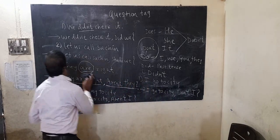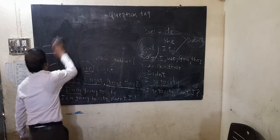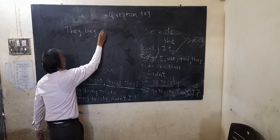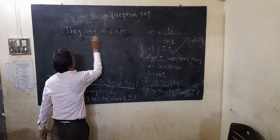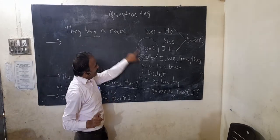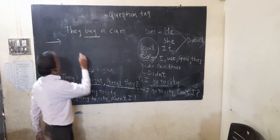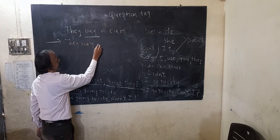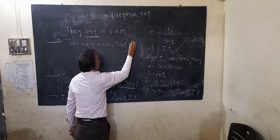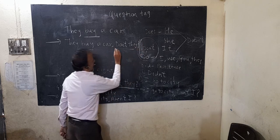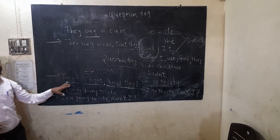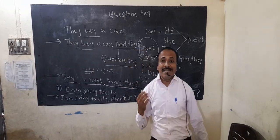Another example: 'They buy a car.' 'Buy' shows present tense. Since the subject is 'they', we use 'do', making the question tag 'don't they?' We write the statement first, then add a comma, then the question tag: 'They buy a car, don't they?' This part is called the question tag. We have covered each and every aspect of question tags, and I hope you understand.